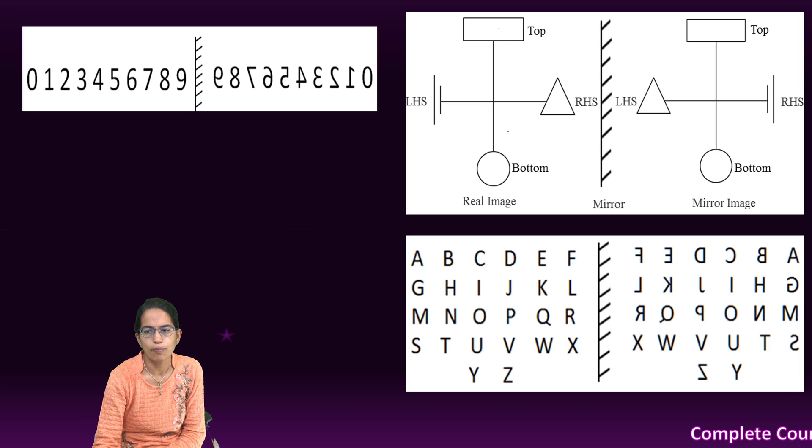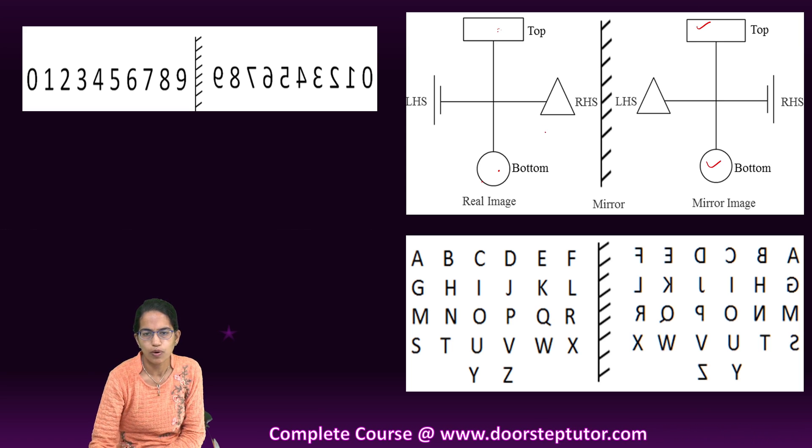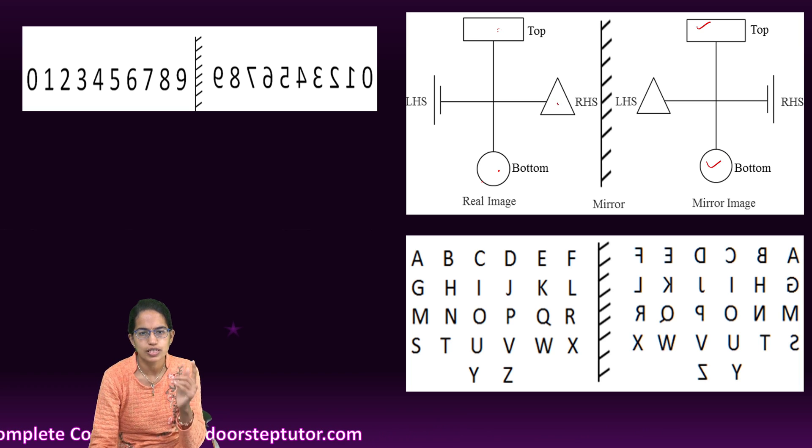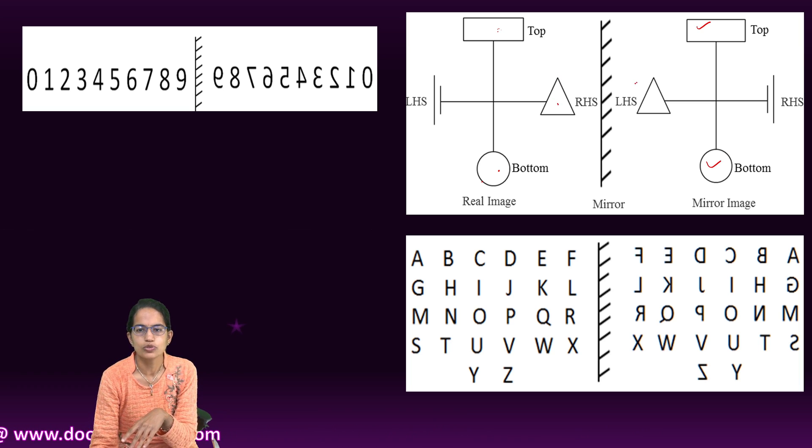So here the top and the bottom would remain the same, so rectangle would remain on the top, circle would remain on the bottom, but the LHS and the RHS would vary. So the triangle which was on the right now comes to the left and the lines which are on the left comes to the right.